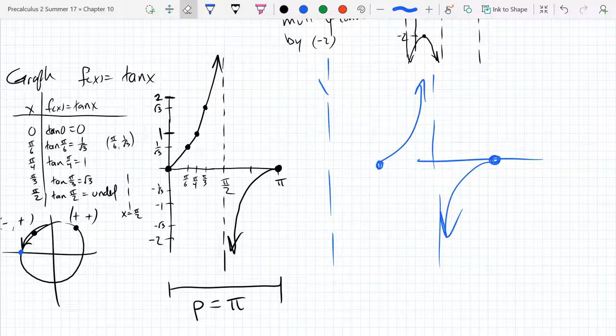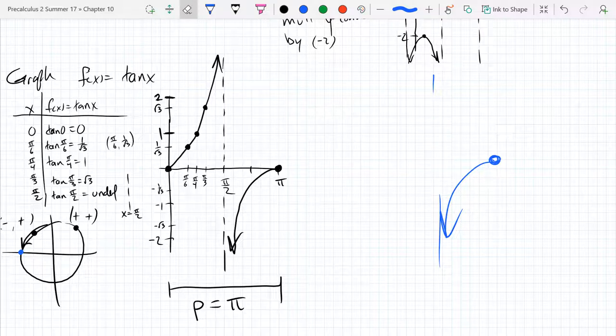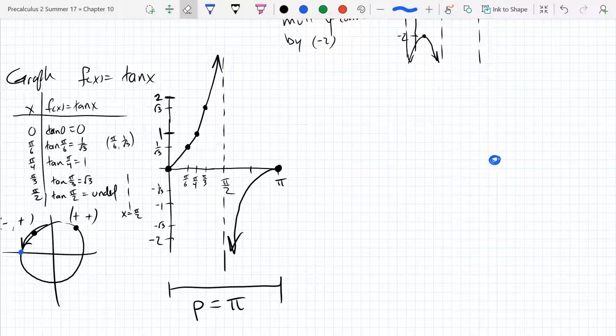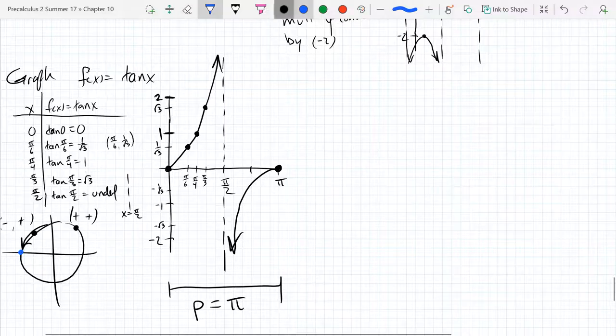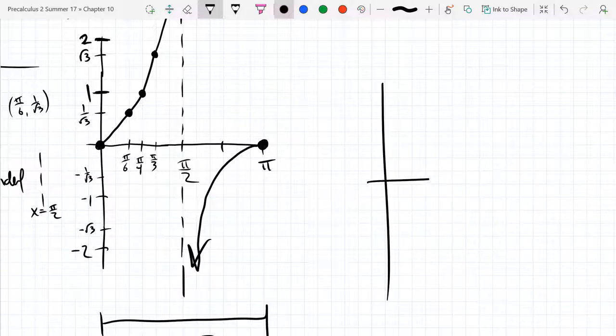So I don't want to clutter this graph up too much, so let's delete this stuff. Come on Eraser. All right. So we'll just draw a stylized version with less information. Easier to remember.